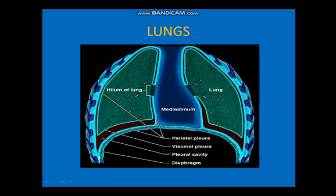Each lung is separated from the other because the heart is present in between. The space between the lungs is called the mediastinum. On the concave side of the lungs there is a triangular depression called the hilum. The mediastinum is the space between the two lungs, and the hilum is the triangular depression where blood vessels as well as airways enter the lungs.